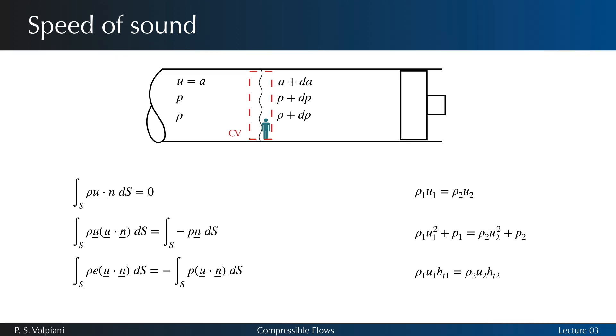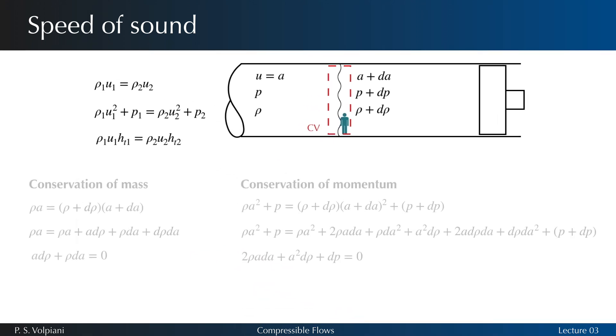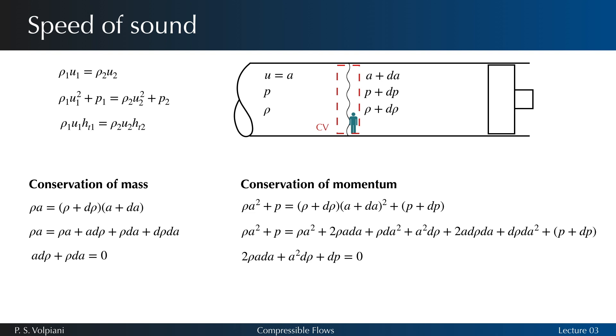Let points 1 and 2 be ahead of and behind the wave respectively. In the case of a stationary ideal flow, the earlier equations are written as follows, where n denotes the unit normal pointing outward the control surface s. Applying these equations to the control volume shown in the figure, the equations governing the flow of an ideal fluid are immediately obtained. But we know that rho 1 equals rho, rho 2 equals rho plus d rho, u1 equals a, u2 equals a plus da, and so on.